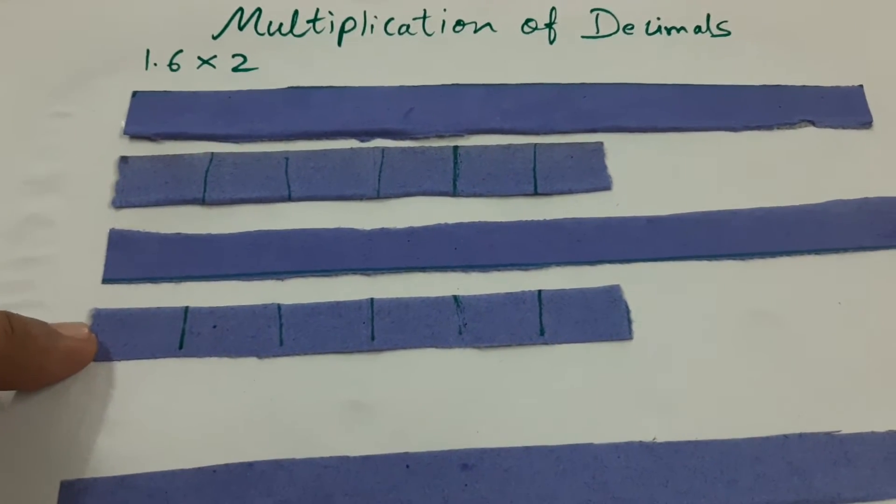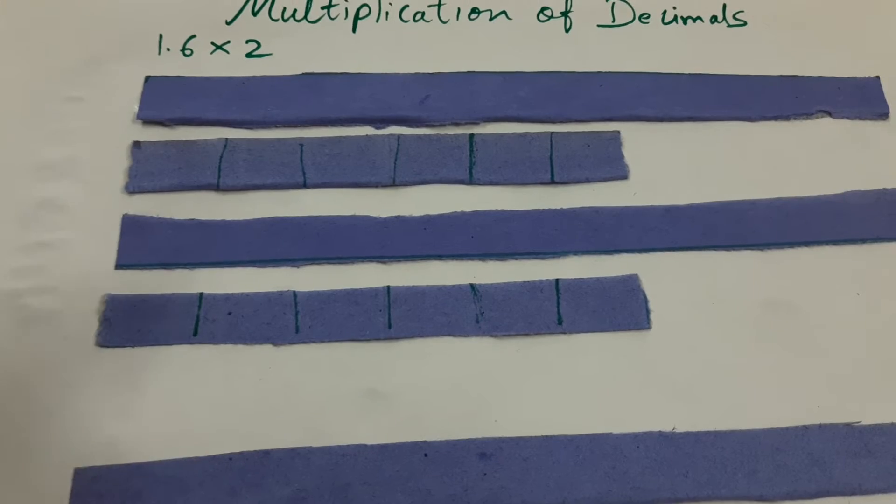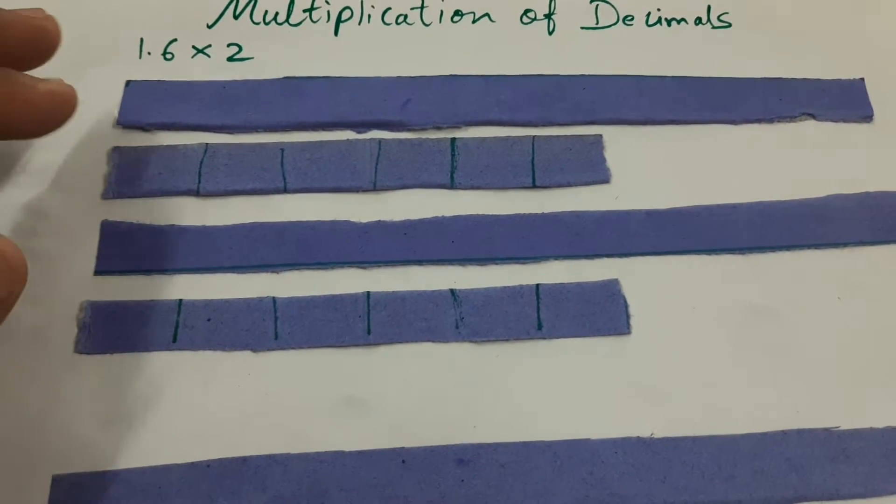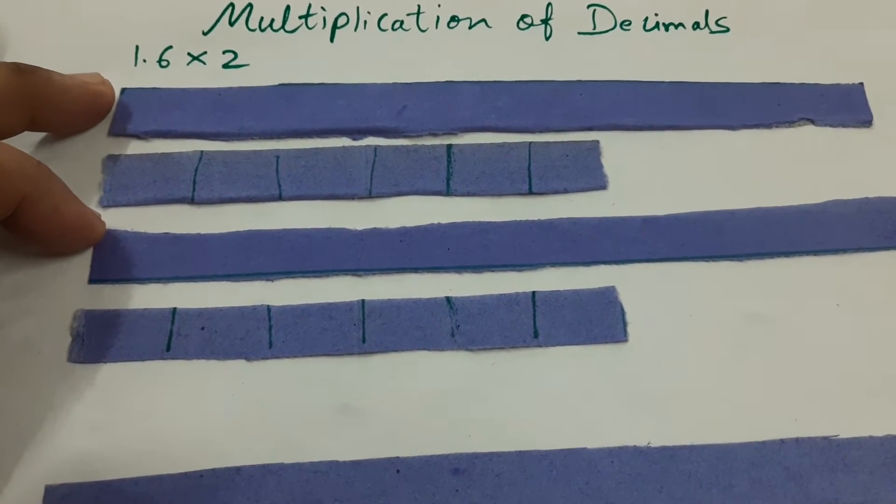So now when we multiply 1.6 into 2 times, here practically what we can see, 2 are already there.